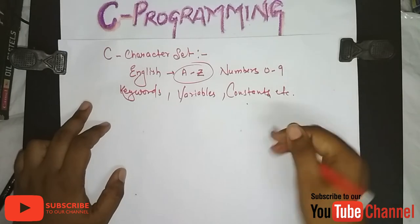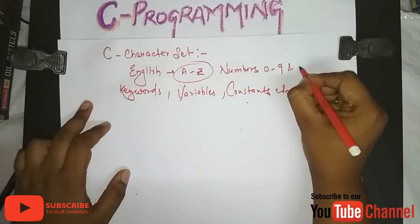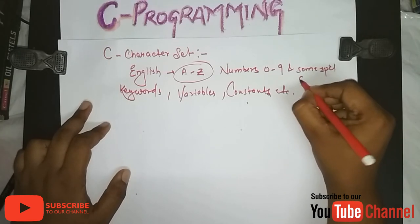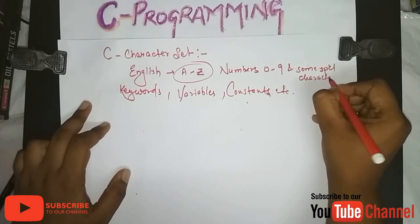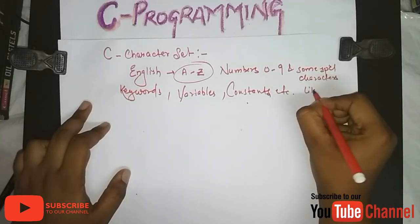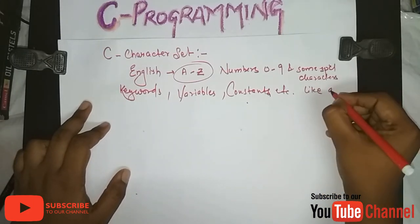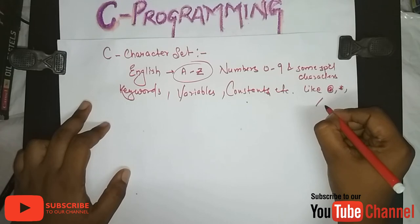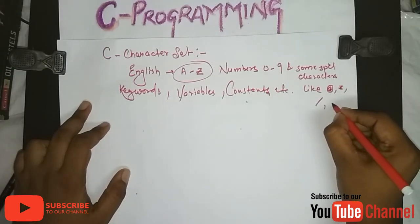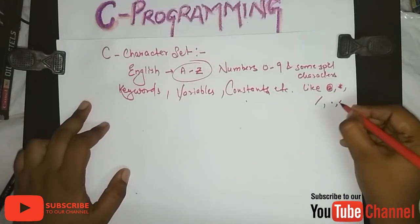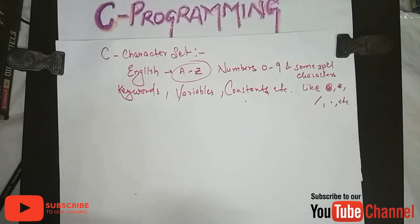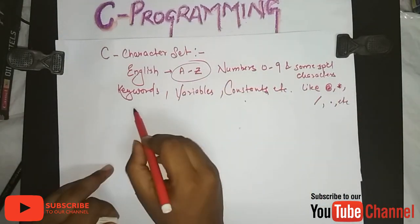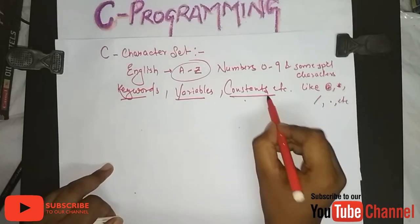We also use some special characters like at the rate (@), asterisk (*), slash (/), dot (.), etc. These characters and numbers form the character set which is used to form keywords, variables, constants, and more in C.